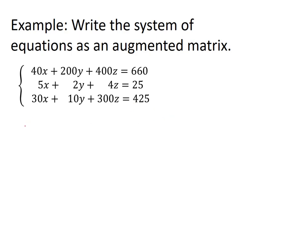Now, because there are three variables and a constant, this is going to have four columns in our matrix. And because there are three equations, our matrix will have three rows.